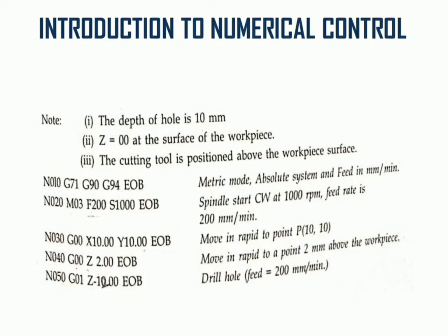Let's start to write the program. The first instruction block N010 starts from the sequence coding, then G71 for metric unit, G90 for absolute dimensioning system, and G94 for feed per mm per minute. End of block.